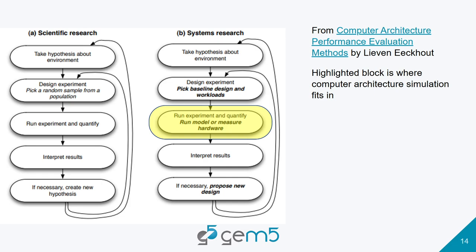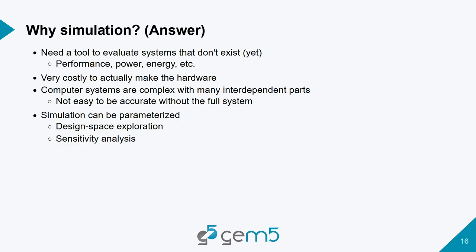In systems research, we have a hypothesis about how something we change about the system will affect things. We design an experiment — picking a baseline and workloads — then develop a model and run it. GEM5 is really focused on developing and running this model to measure the effect of our idea on the hardware. We need some kind of tool to evaluate systems that don't exist yet — to estimate performance, power, and energy before we build them.